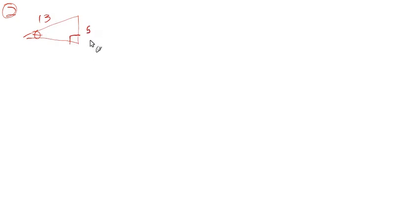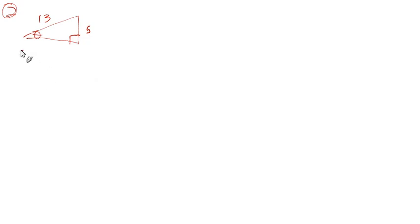So what are they asking? They say find the exact values of the six trigonometric functions — sine, cosine, tangent, cosecant, secant, and cotangent. So if we look at the angle here, what's the sine? It's the opposite over the hypotenuse, so that would be 5 over 13.